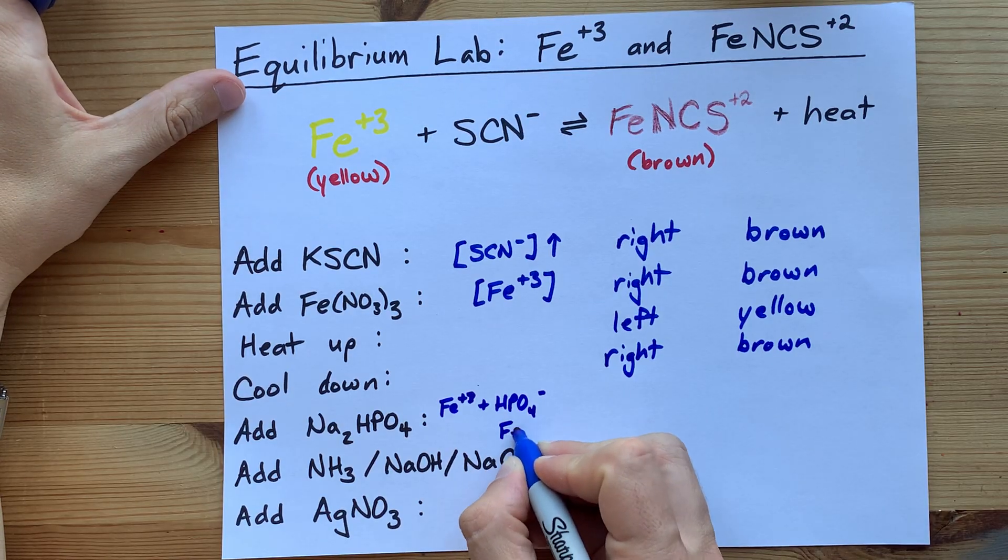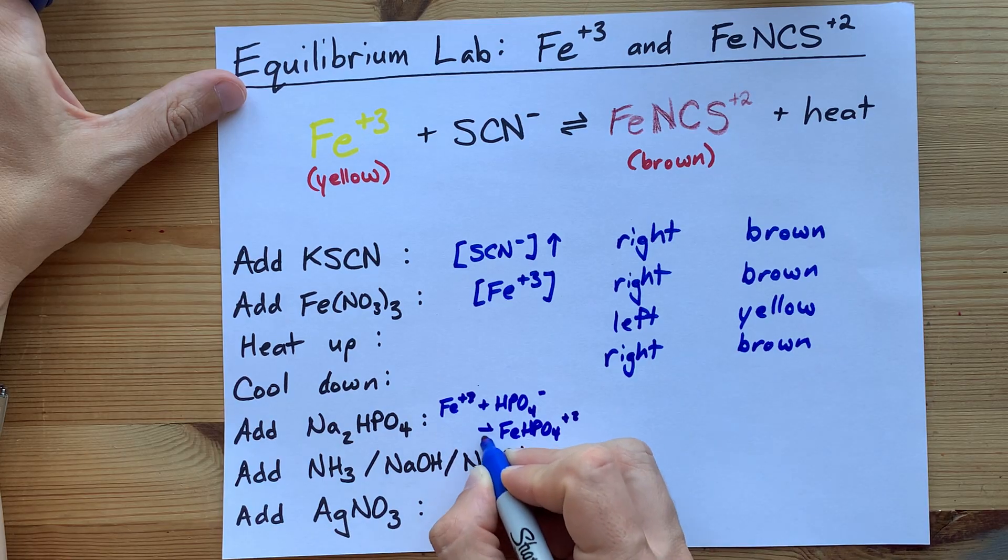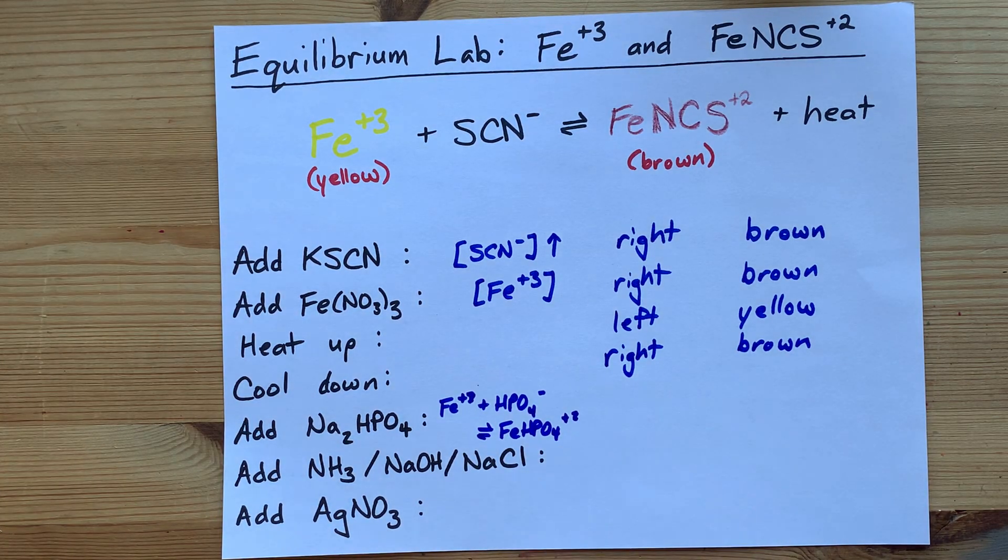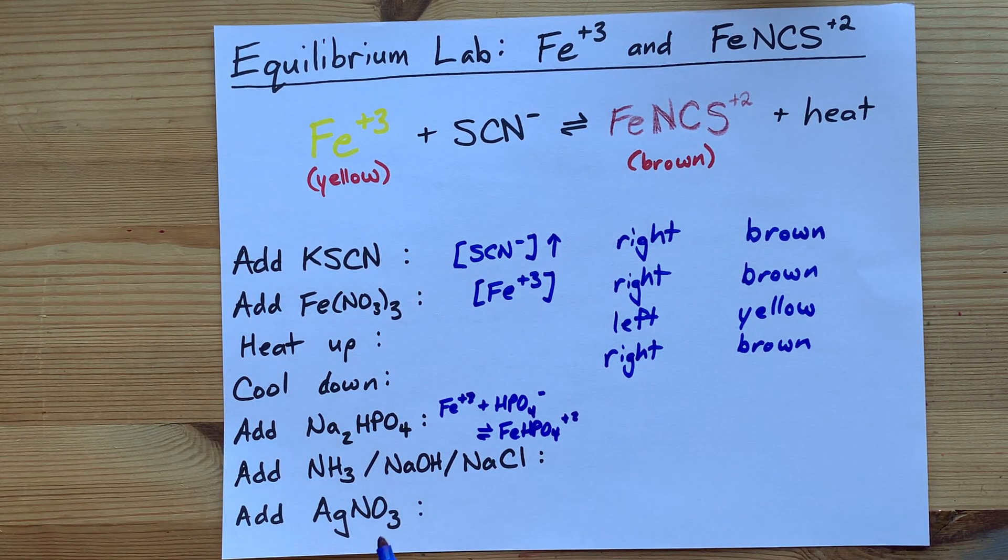If you care, it's FeHPO4 with a plus 2 charge. That itself is an equilibrium, but for all of the HPO4 that you add, you're going to consume some of the Fe plus 3.